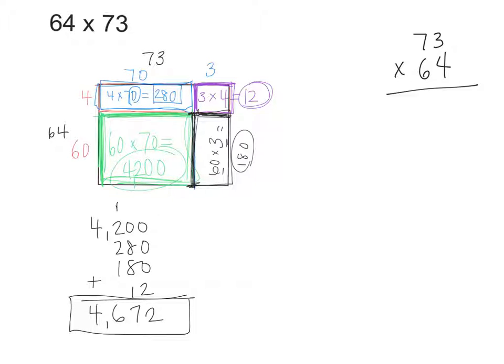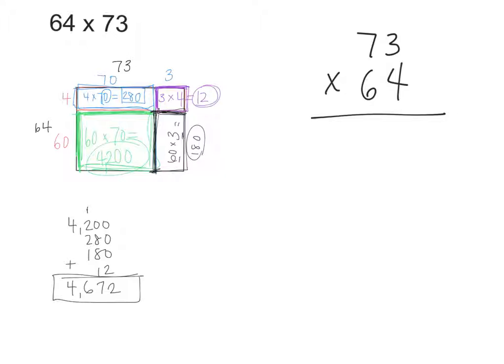Give me a thumbs up if that area model makes sense to you. Go ahead and write yourself the standard algorithm, which is 73 times 64. Now, I want you to pay attention today because I'm going to show you a way to do it that might be different than what you learned before. So when we do standard algorithm multiplication, we always start with the bottom factor. And the bottom factor, are we starting with the tens place or the ones place? We always start on the very right-hand side, which is, in this case, the ones place. So for right now, we're going to ignore the 6, the 60.